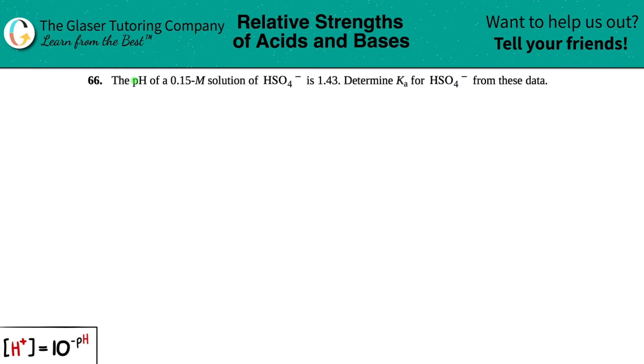Number 66. The pH of a 0.15 molar solution of HSO4- is 1.43. Determine the Ka for HSO4- from these data.